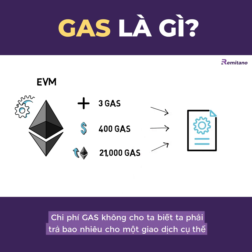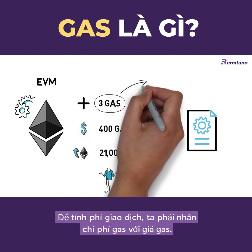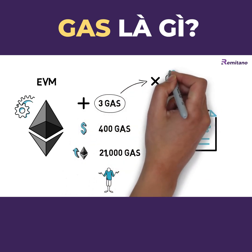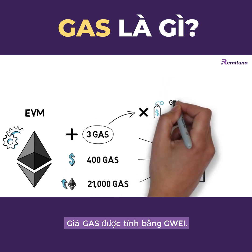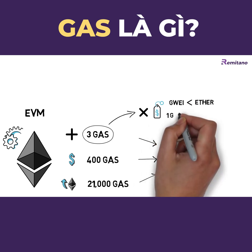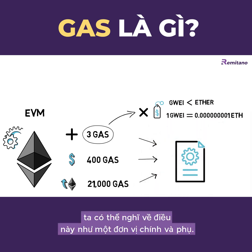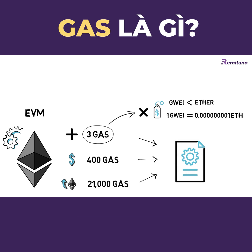What is interesting is that the gas cost by itself doesn't tell us how much we have to pay for a particular transaction. To calculate the transaction fee, we have to multiply the gas cost by the gas price. The gas price is measured in Gwei, a smaller unit than Ether, similarly to dollars and cents.